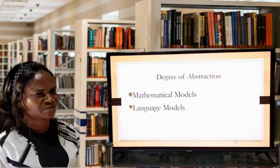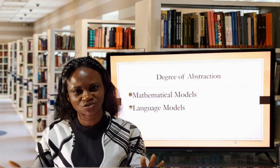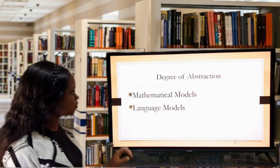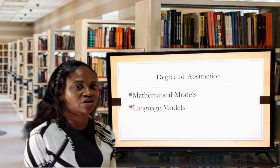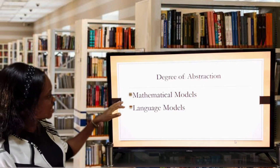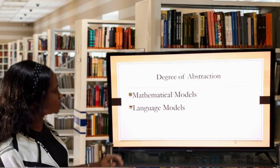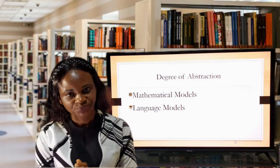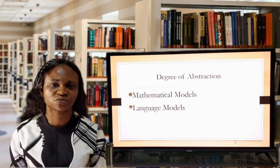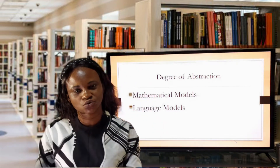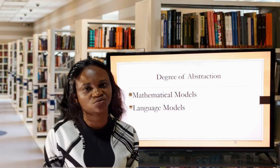The first is by the degree of abstraction. When we say something is abstract, sometimes people feel it means they can't connect it with the reality of life — it looks vague. When we talk about the degree of abstraction, according to Gutta and Hira, they classified it using two sub-classifications: mathematical models and language models. Mathematical models simply use symbols and equations to represent variables, to represent a construct, or to represent the reality of life.